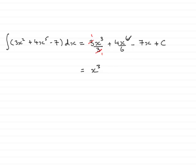For 4 sixths x to the power 6 you can divide 2 into both the 4 and the 6, that's 2 and 6 goes 3. So you have 2x to the 6 over 3 or 2 thirds x to the 6. Then we have minus 7x and then the constant of integration plus c. And there you have it.